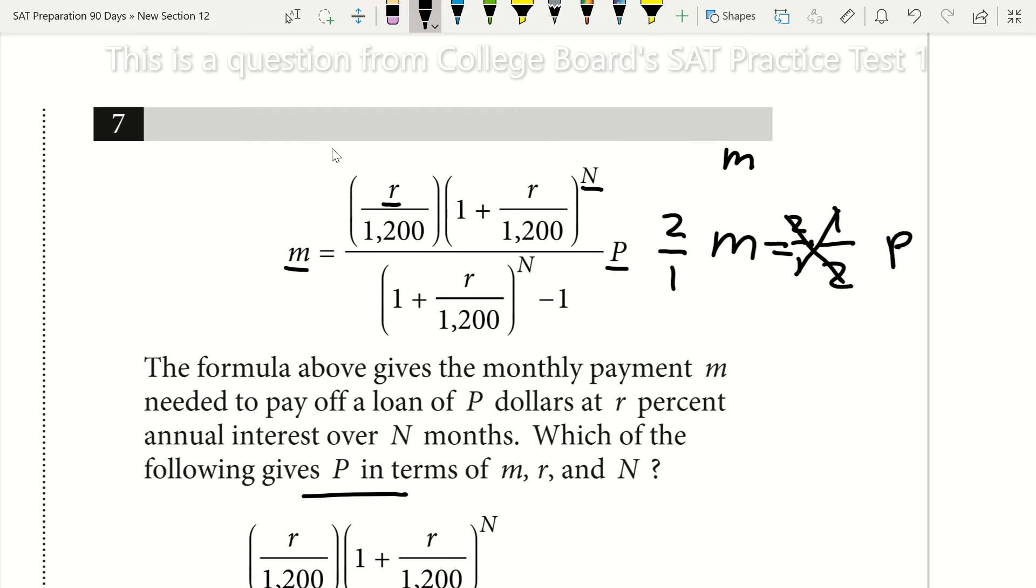If we look at what we originally had, we originally had m equals 1 over 2 times p. Now we see that all we did was flip what was in our denominator. I'm going to put it in a box here, in a green box, so you can see it better.